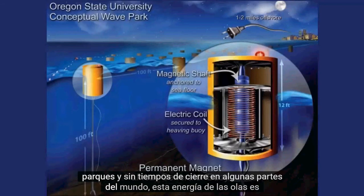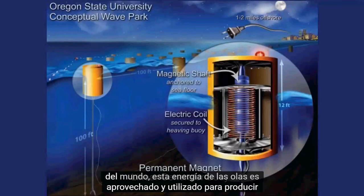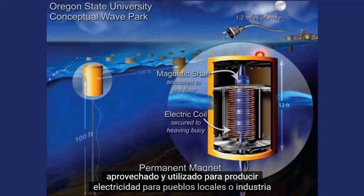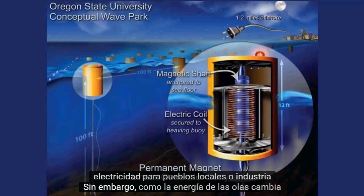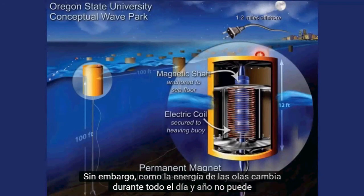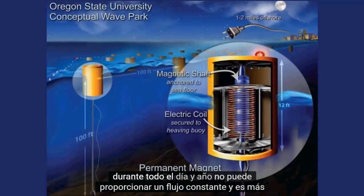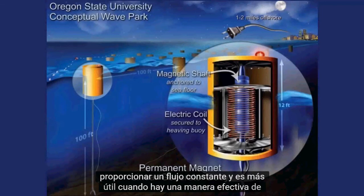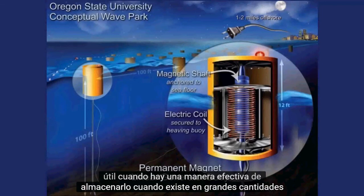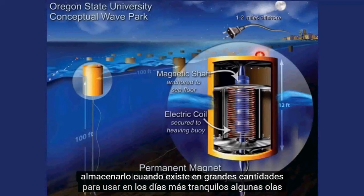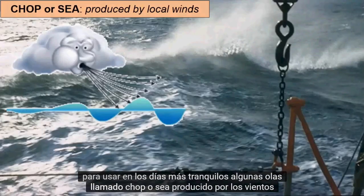In some parts of the world, this wave energy is harnessed and used to produce electricity for local towns or industry. However, as wave energy changes throughout the day and year, it cannot provide a consistent flow and is most useful when there is an effective way to store it when it exists in high amounts for use on the calmer days.